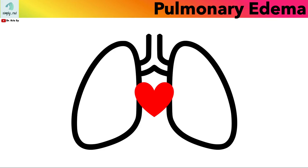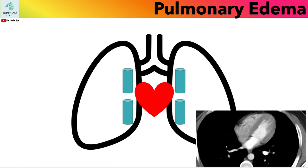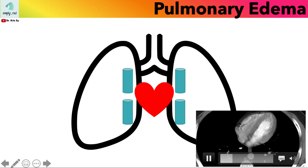Welcome back. Today we're going to review what pulmonary edema looks like on the X-ray. This is the heart, and now we're going to take a look at the pulmonary veins. Recall that we have veins for the upper and the lower lobes, and these pulmonary veins are located here.